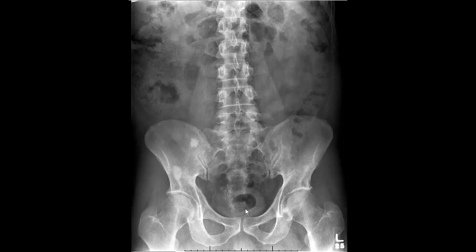First, we want to determine small bowel from colon. You can do this a number of ways — look for the expected anatomic location of the colon, with the descending colon on the left, the ascending colon on the right, to varying degrees depending on how much air is within it. Depending on how redundant the sigmoid colon is, you would expect it to be seen down in the pelvis. The small bowel will be more central. Other differentiators include the mottled appearance of feces within the colon, haustral markings in the colon versus valvulae conniventes in the small bowel, which should be more circumferential around the entire small bowel.